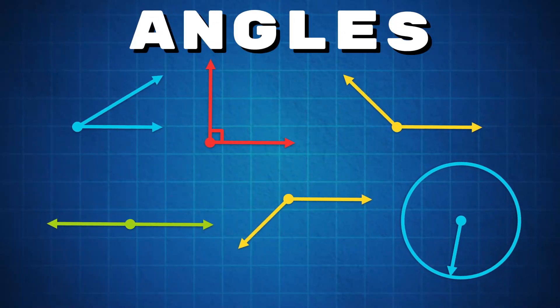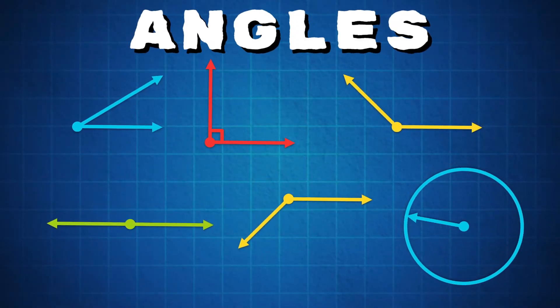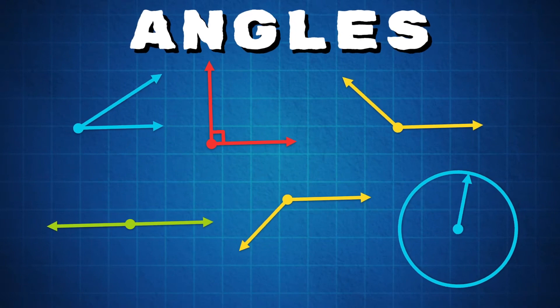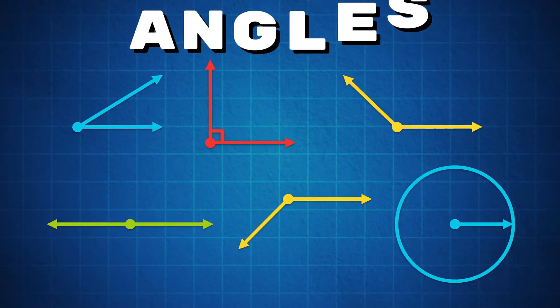These are the types of angles you most commonly see. We'll name them off one by one in order by degree.